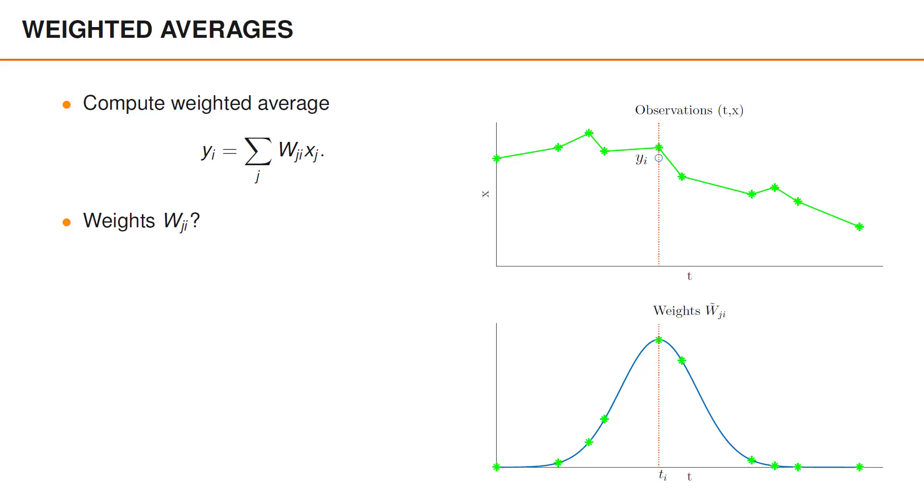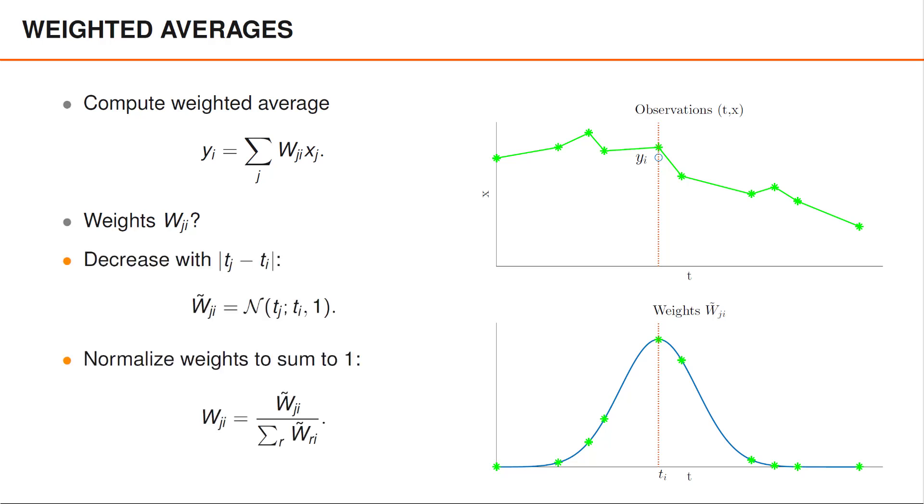In this setting, it seems natural to assign larger weights to nearby points since the function is likely to take similar values at those points. For instance, we might use a bell-shaped curve centered at ti to determine the unnormalized weights w tilde.